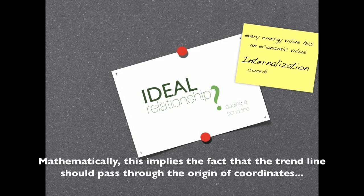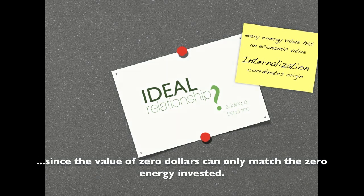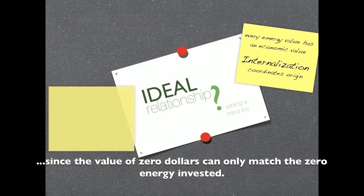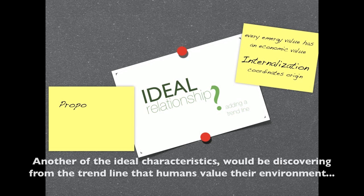Mathematically, this implies the fact that the trend line should pass through the origin of coordinates, since the value of zero dollars can only match the zero energy invested.